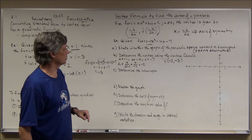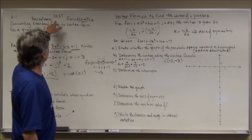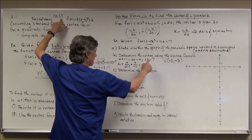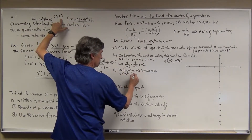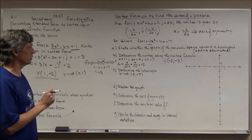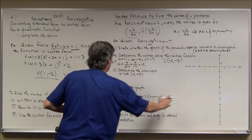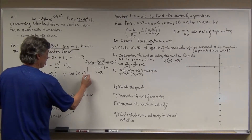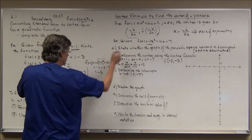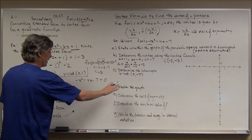To find the y-intercept, use the shortcut: it's (0, c), so since c = -7, the y-intercept is (0, -7). To find x-intercepts, set y = 0: 0 = -x² - 4x - 7. Multiplying through by -1 gives x² + 4x + 7 = 0, which has the same roots.